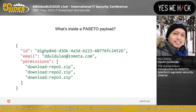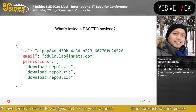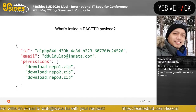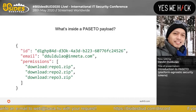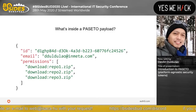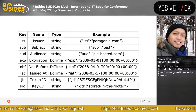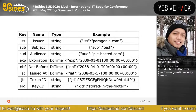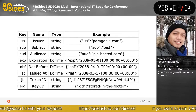Next is what's inside the PASETO payload. Here's an example of a PASETO payload: we have ID, email, and permissions. And here are sample payload claims: cap/sub, issuer, subject, audience, expiration, not-before, issued-at, token ID, and key ID.